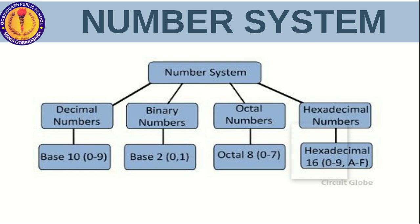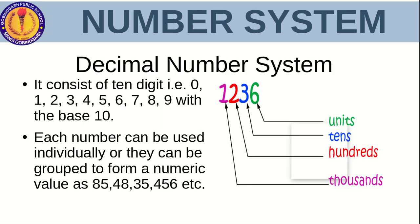Any amount you want to make, you use only 0 to 9 digits. Suppose you are making 236 — the digits 2, 3, 6 — each and every digit will be between 0 and 9. So the decimal number system covers only digits 0 to 9. Binary uses 0 and 1, octal 0 to 7, hexadecimal 0 to 9 plus letters — we will discuss all these number systems in detail. First, let me explain the decimal number system.